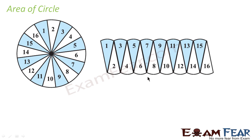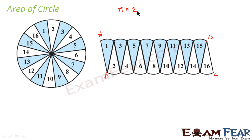If you see, this arrangement looks like a rectangle. And if you see the length of this, it is nothing but half the perimeter. Why? Because if we add from here to here, and also from here to here — let me name these points a, b, c, d — if you take the distance from a to b and c to d, this is the perimeter. That is pi into 2r.